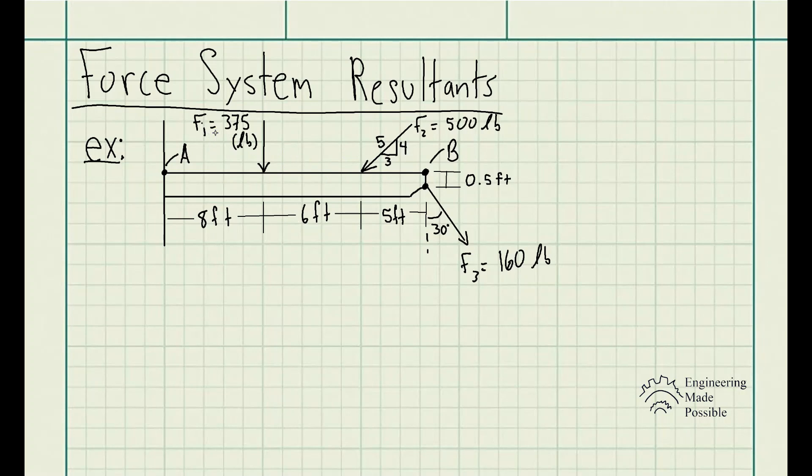We have force 1 equal to 375 pounds going downward. Force 2 is 500 pounds at a slope here. We have F3 being 160 pounds, 30 degree angle with respect to a vertical axis, and we have all the dimensions here at what locations these forces are being applied to.